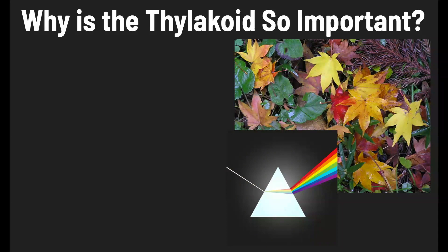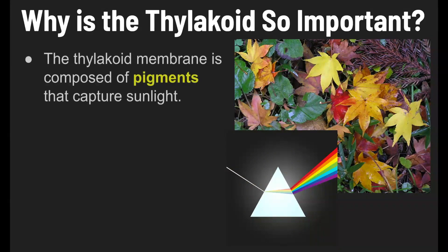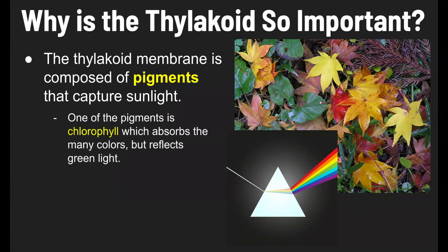Now, why is the thylakoid so important? The thylakoid — specifically the membrane of the thylakoid, that outer layer — is composed of pigments. And these pigments capture the sunlight that plants need in order to do photosynthesis. One of the pigments is called chlorophyll, and it absorbs many colors, but it reflects green light.